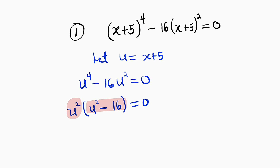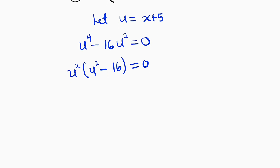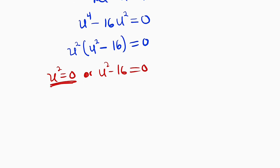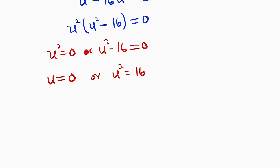What we have is u squared multiplied by (u squared minus 16) equal to 0. Applying the same rule we use for quadratic equations: whenever two factors multiply and the result is 0, it implies one or all of the factors are 0. So we set each factor to 0. u squared equals 0, or u squared minus 16 equals 0. For the first one, taking the square root of both sides gives u equal to 0.